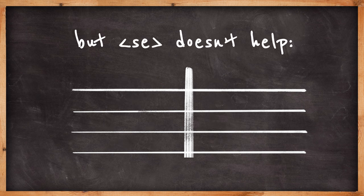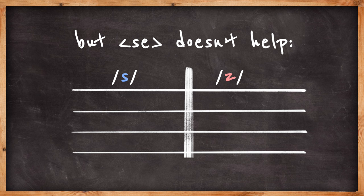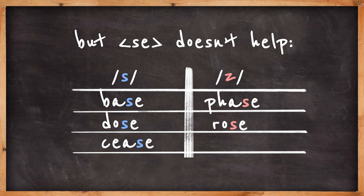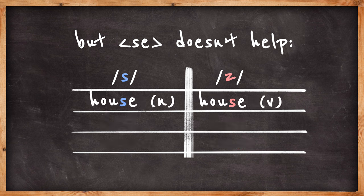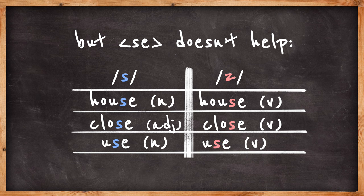And SE at the end of a word is one of those. So, you have base, phase, dose, rose, cease, ease. Some words even have both depending on word type. House, house, close, close, use, use.